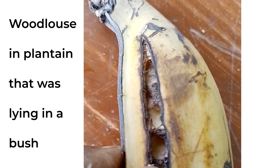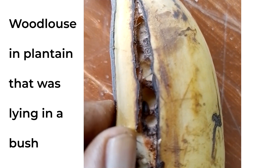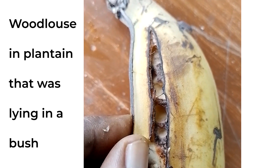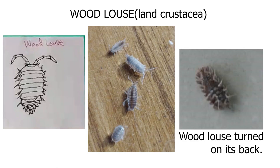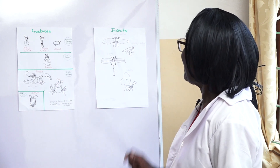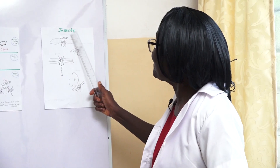The wood louse is the only land crustacean. It lives in moist soil rich in decomposing wood or leaf litter — leaf litter being bits and pieces of decomposing plant material. Even in decomposing plant material found in the bush, wood lice can be found. Its exoskeleton is quite tough but it lives in cool, moist places.